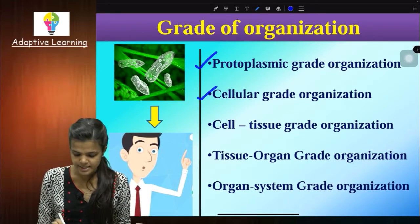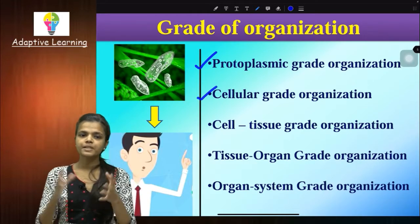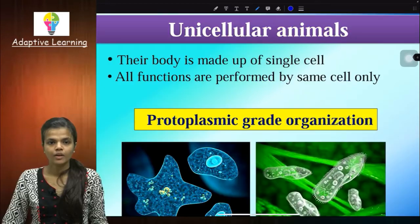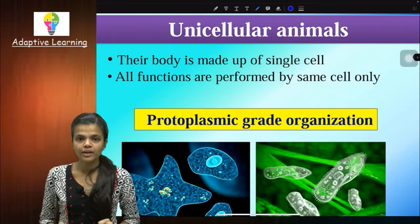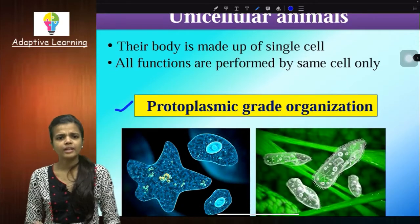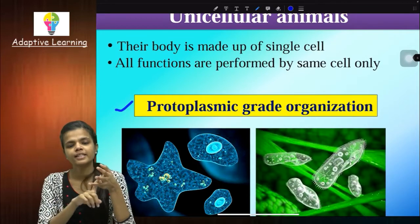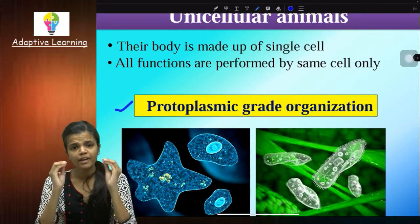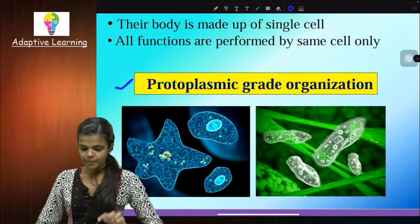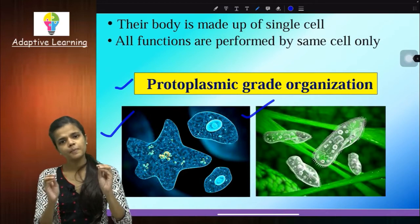After that is cellular grade, in the case of multicellular organisms. There is an aggregation of cells but tissue is not formed — just aggregation. Let's start with unicellular animals. They have protoplasmic-grade organization. Their body is made up of only a single cell, where nutrition, reproduction, and excretion — everything will be done by the same cell. For example, Amoeba and Paramecium. Protoplasmic — these are the simplest. Their grade of organization is protoplasmic-grade organization.